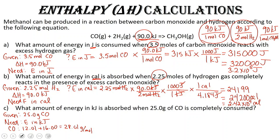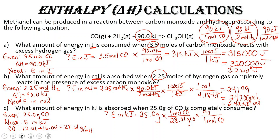Starting with 25.0 grams of carbon monoxide, we multiply by one mole of CO over 28.01 grams of CO to convert to moles, then multiply by 90.0 kilojoules per one mole of CO from our balanced equation. Grams and moles cancel, and we're left with kilojoules. Plugging into the calculator gives us 80.3 kilojoules of energy absorbed — three significant figures.